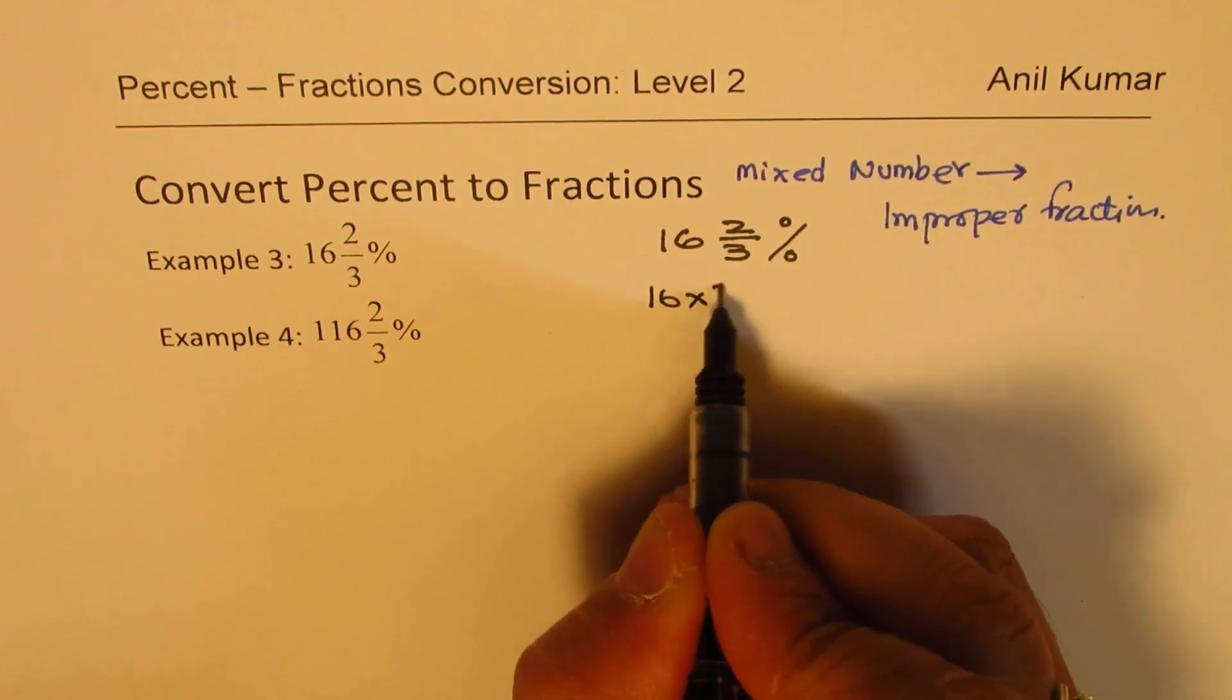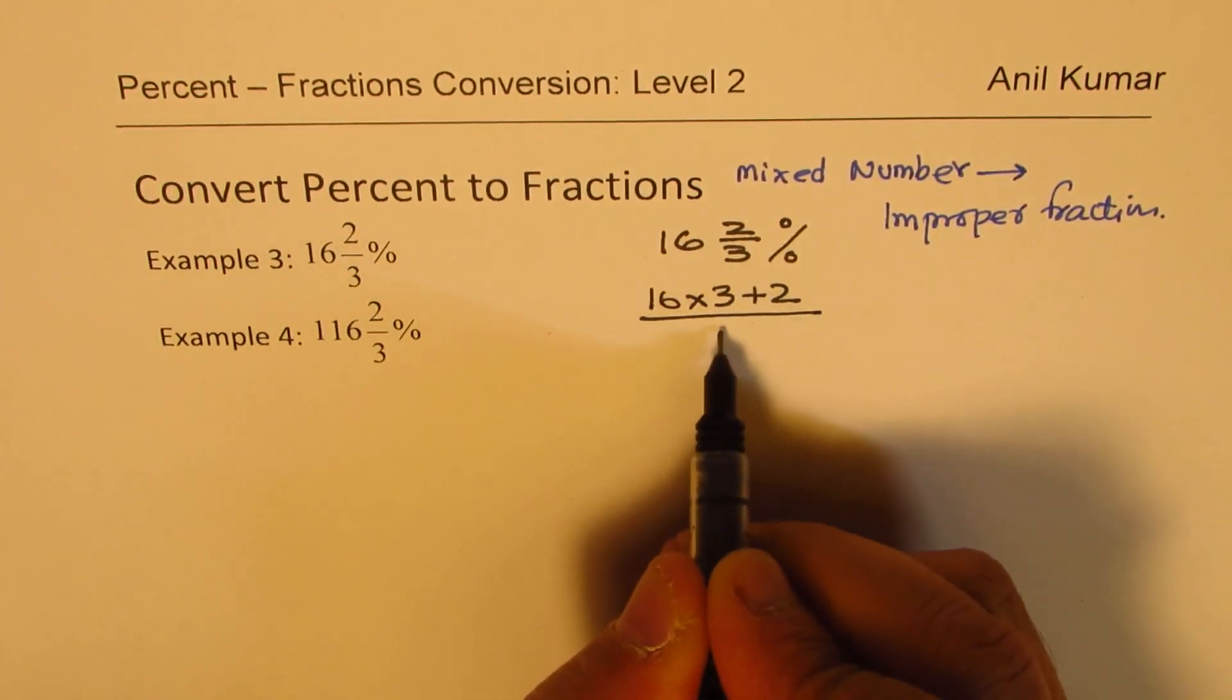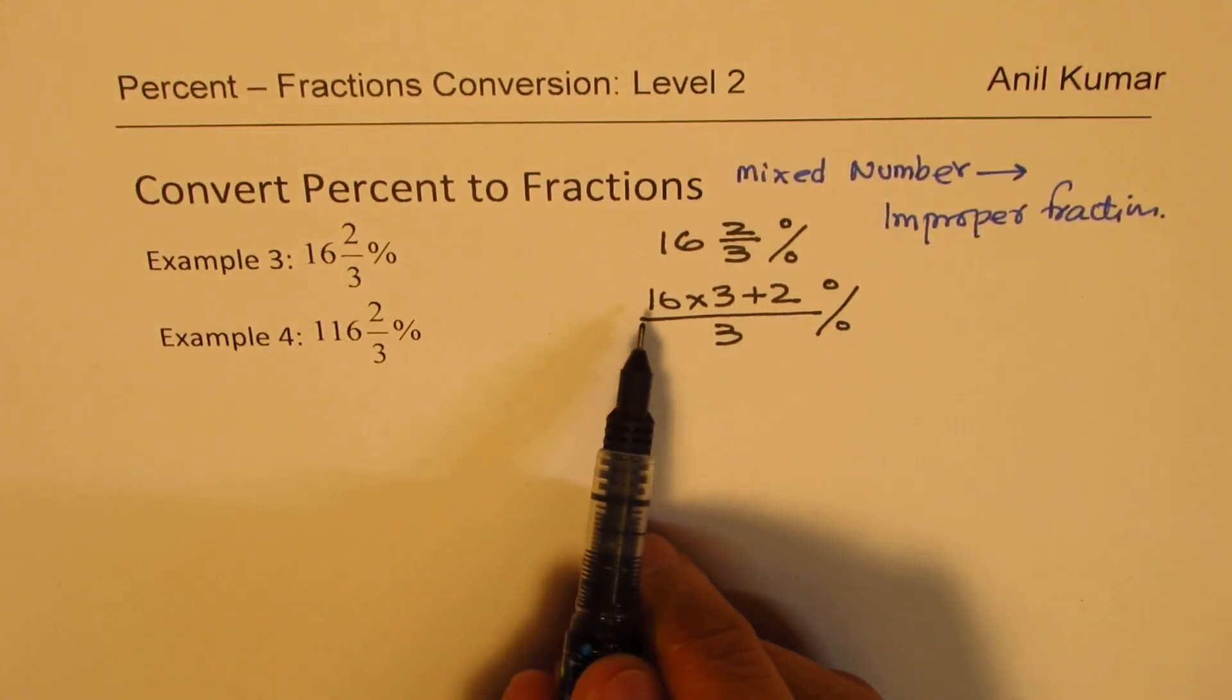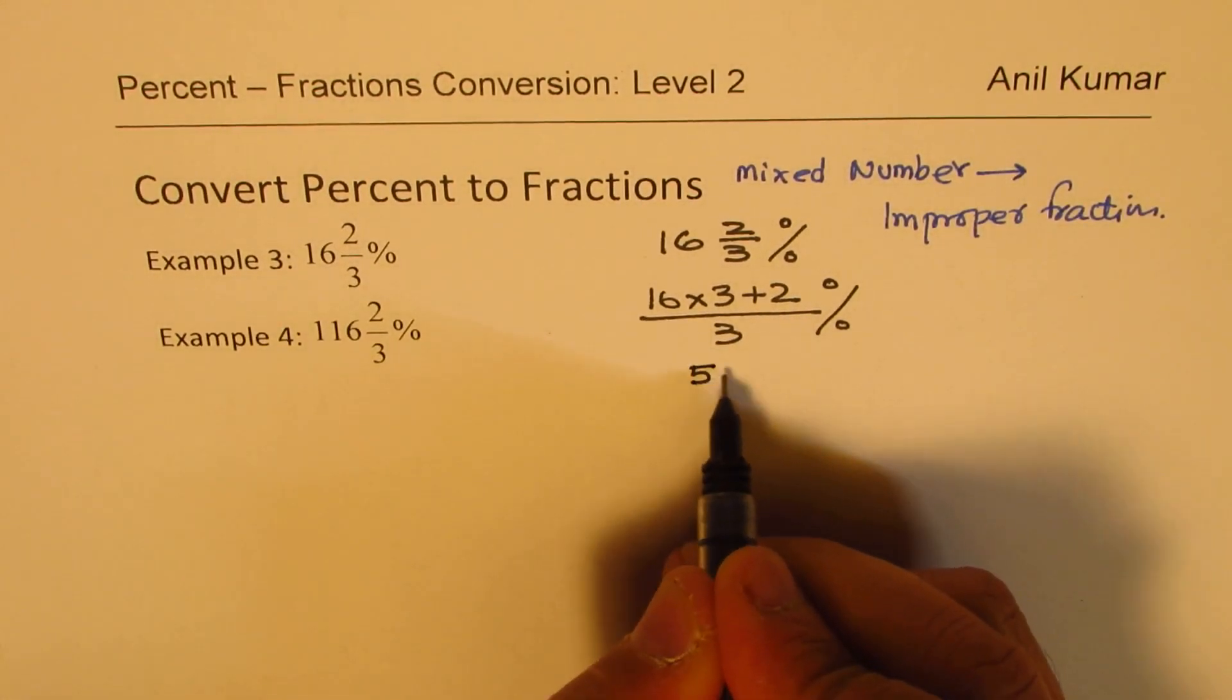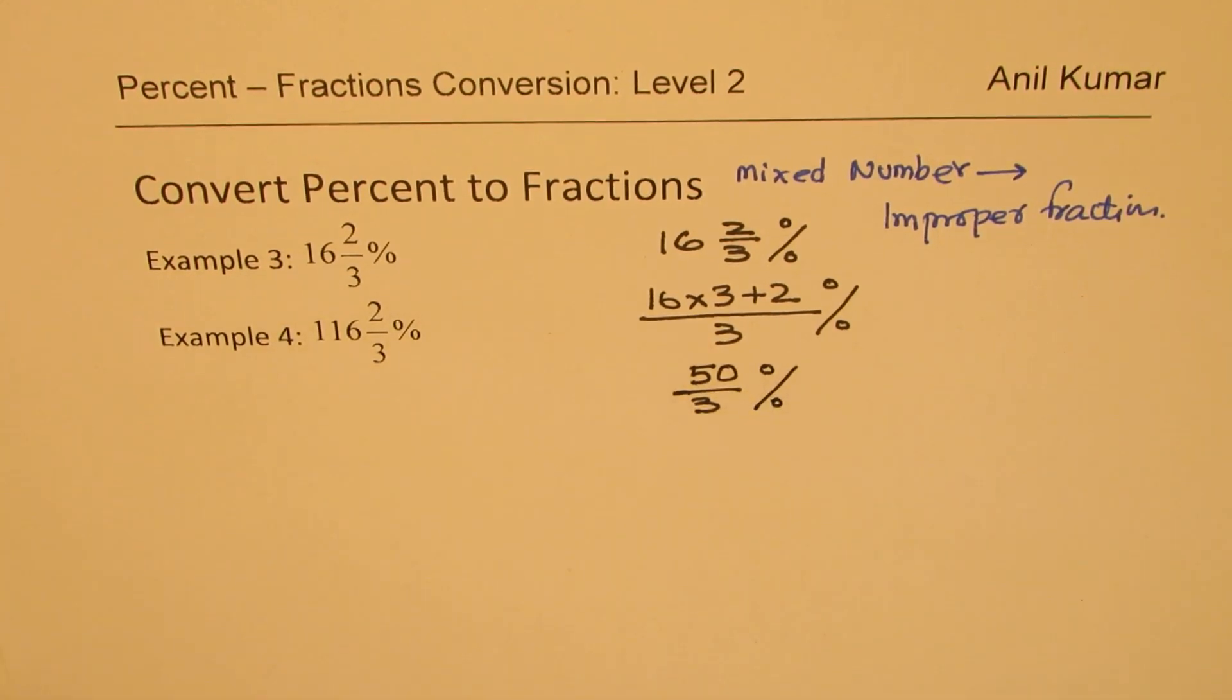So that is to say, we'll get 16 times 3 plus 2 in the numerator. Denominator remains as 3 itself. That percent, correct? So when you do that, 16 times 3 is 48 plus 2 is 50. So what we get here is 50 over 3 percent. Do you see that? So that is what we get.